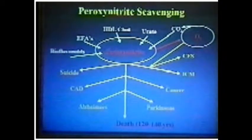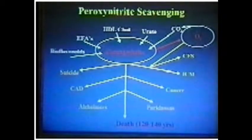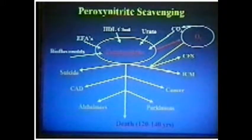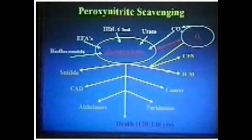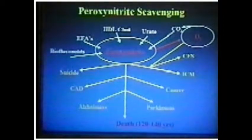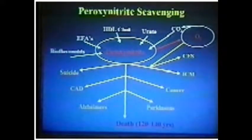Some of the defenses against peroxynitrite — it turns out the biggest defense is carbon dioxide, one of the products of the mitochondria. So the mitochondria produces the very thing you need most to defend yourself against the thing you don't want to create when you make energy. If CO2 is your major defense, then how could you increase CO2? You would slow your breathing down. So the best way to defend against this oxidant stress is to slow down your breathing. The worst thing you could do is speed up your breathing.